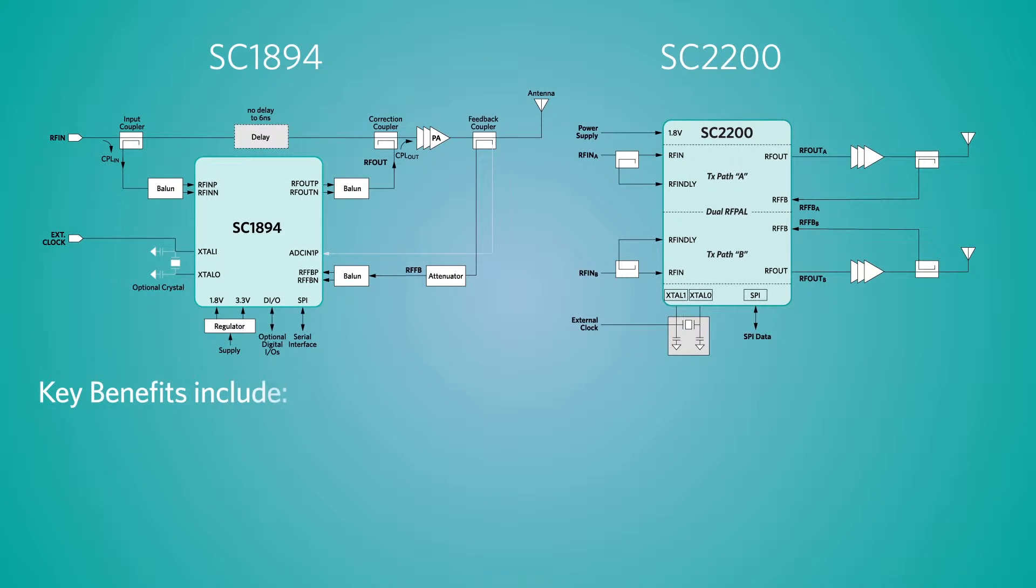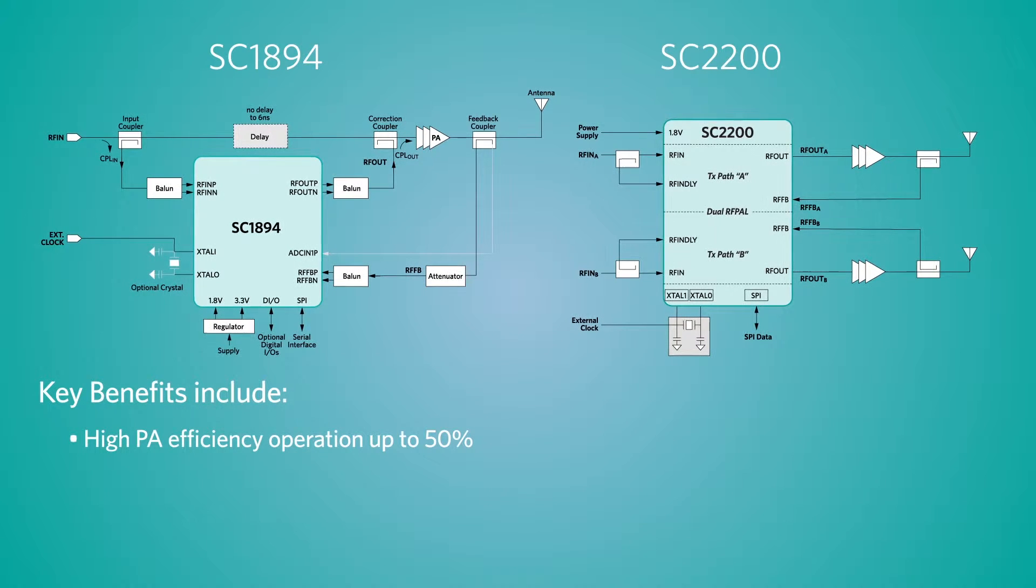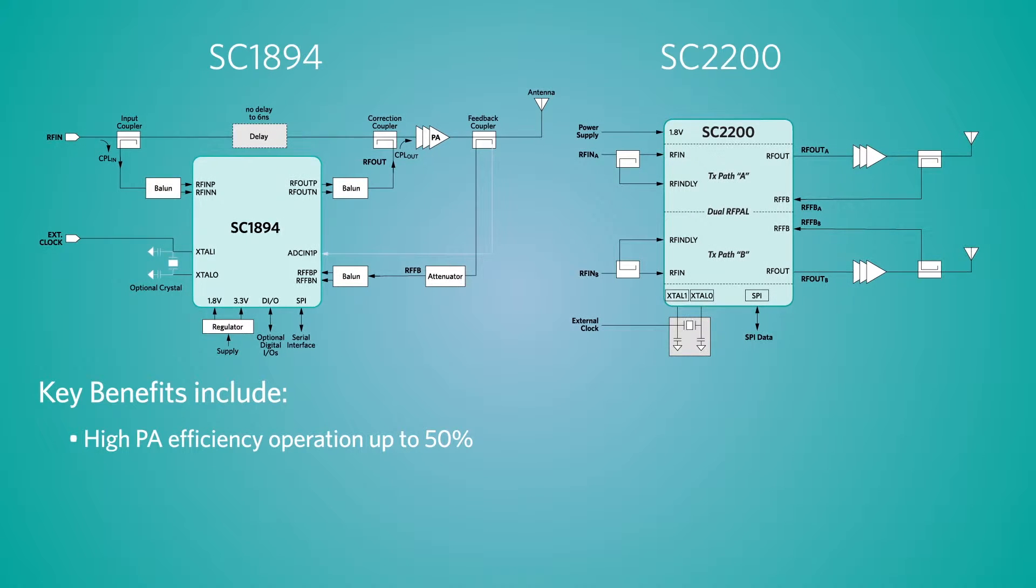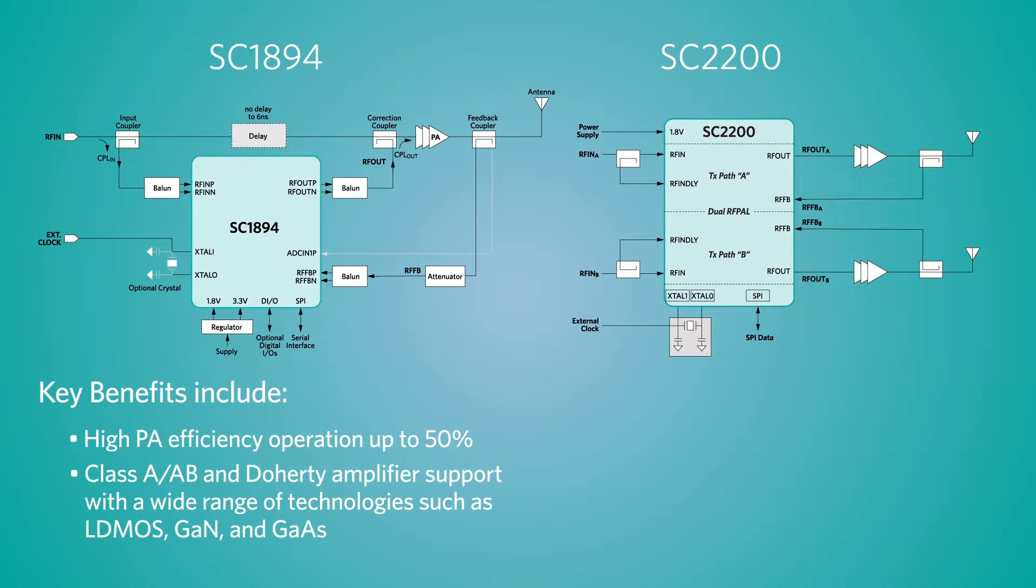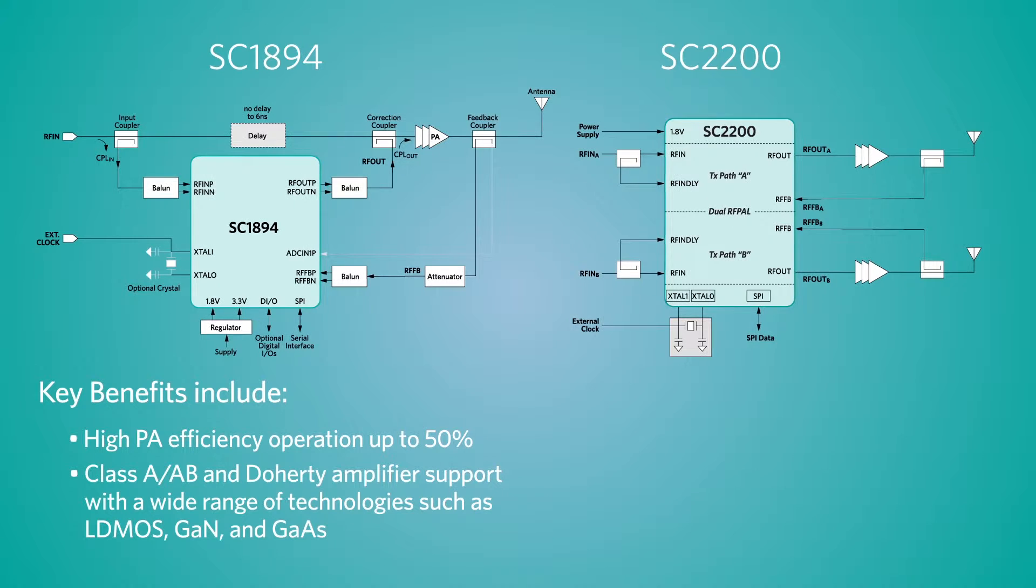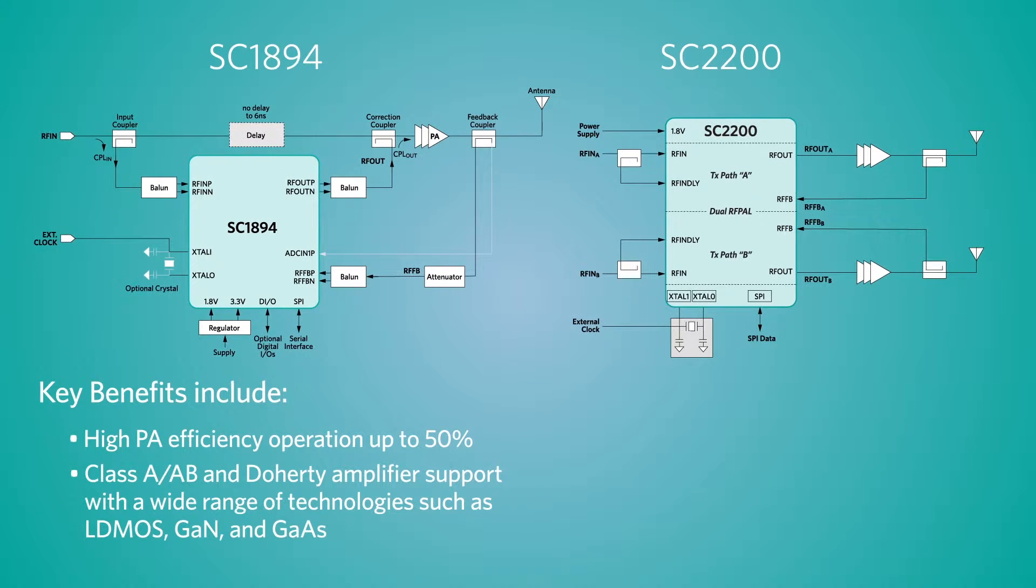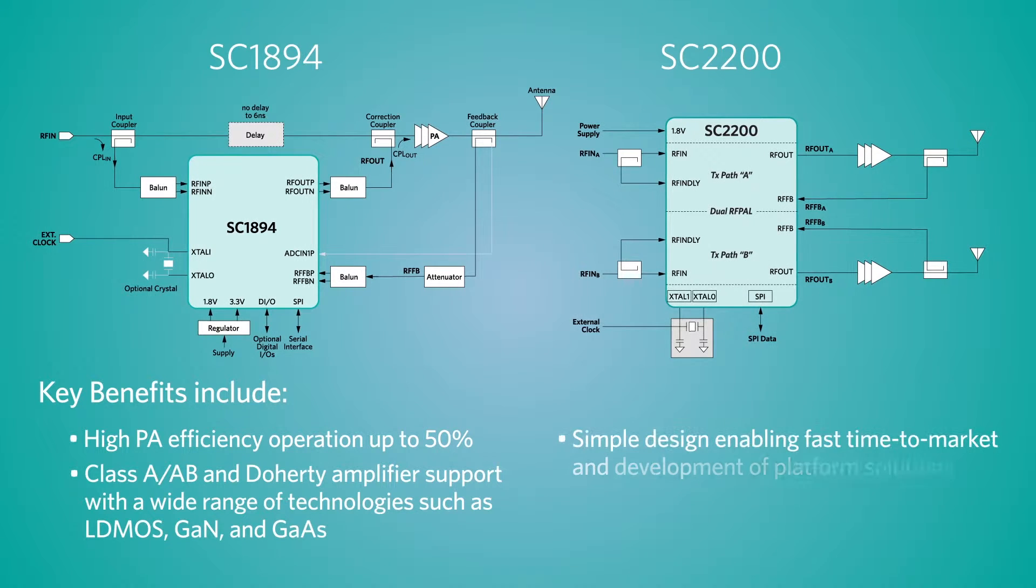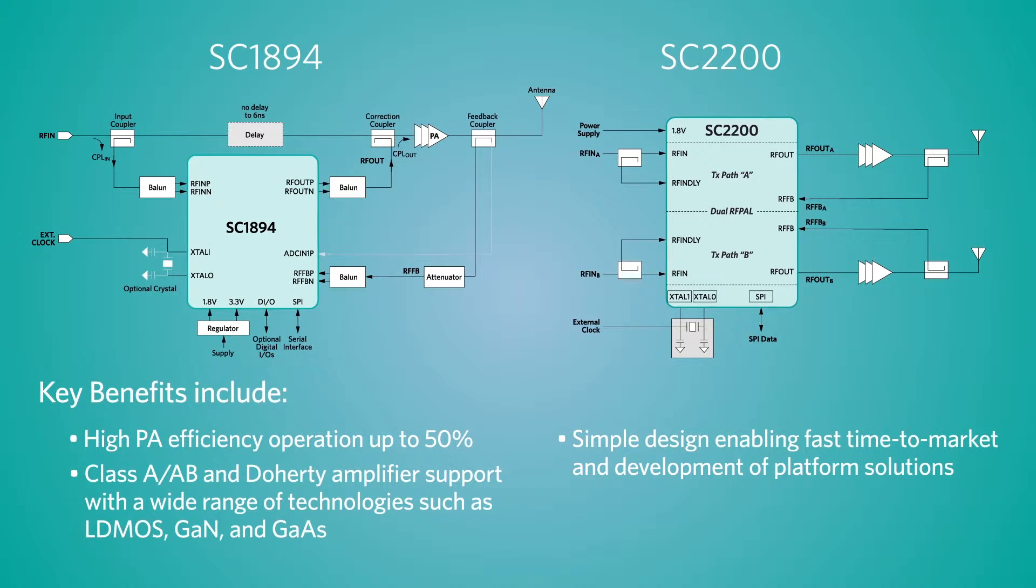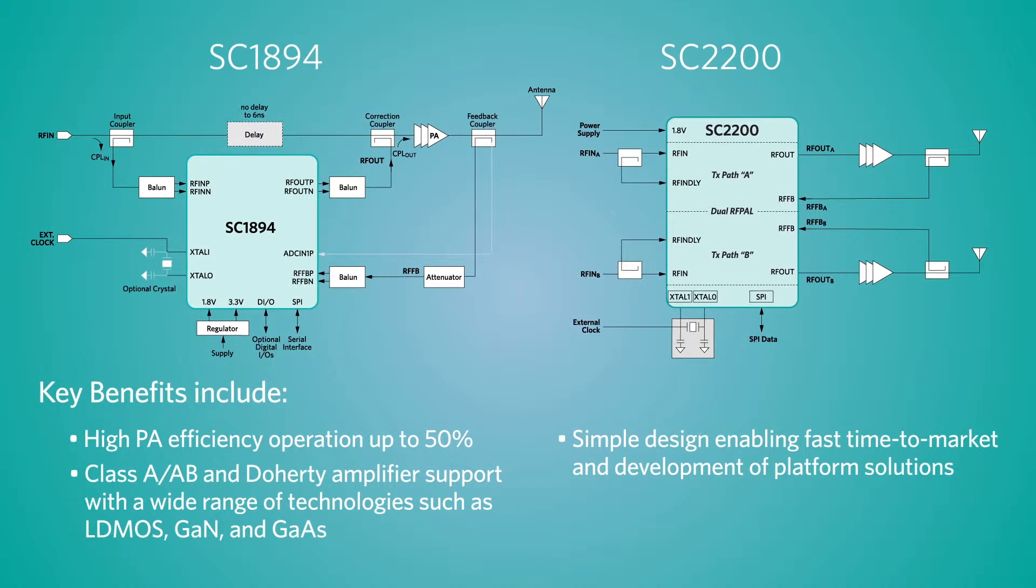Key benefits include high power amplifier efficiency operation of up to 50%, Class A, AB, and Doherty amplifier support with a wide range of technologies such as LDMOS, GaN, and GaAs. Simple design enabling fast time-to-market and development of platform solutions.